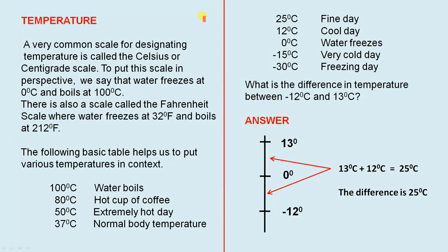Temperature. A very common scale for designating temperature is called the Celsius, or Centigrade, scale. Water freezes at 0 degrees Celsius and boils at 100 degrees Celsius. There is also the Fahrenheit scale, where water freezes at 32 degrees Fahrenheit and boils at 212 degrees Fahrenheit.